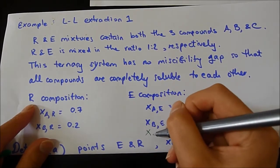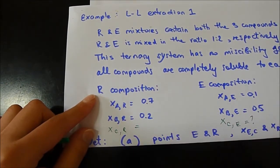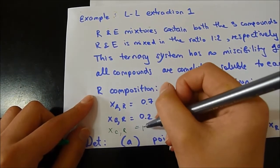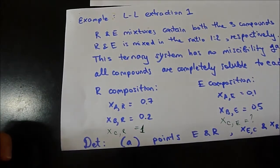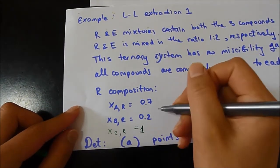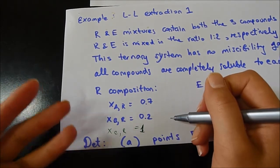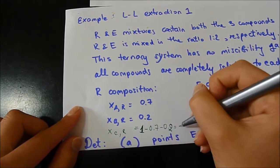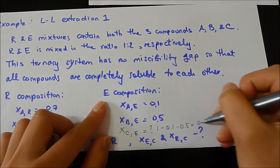Finding XCR and XCE is straightforward. For the R composition, XCR = 1 − 0.7 − 0.2 = 0.1. For the E composition, XCE = 1 − 0.1 − 0.5 = 0.4.